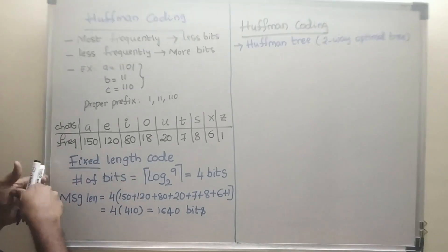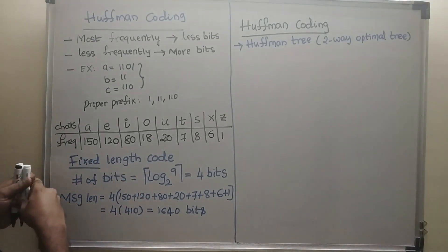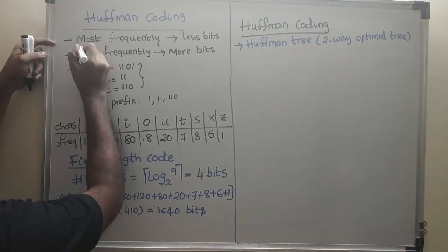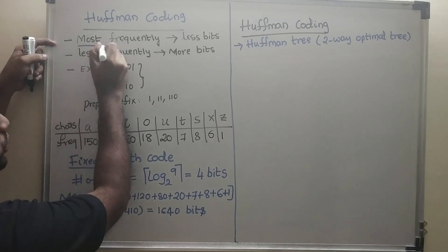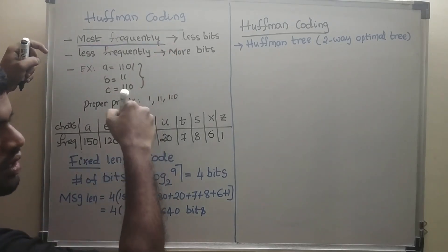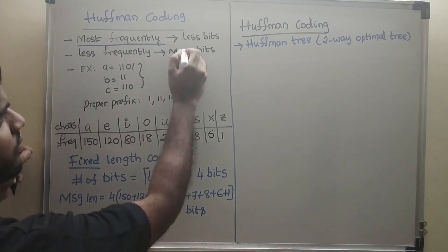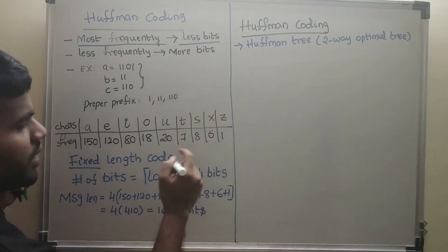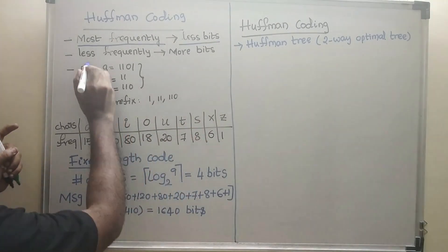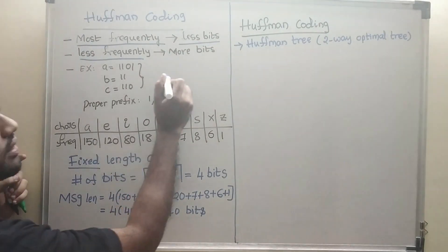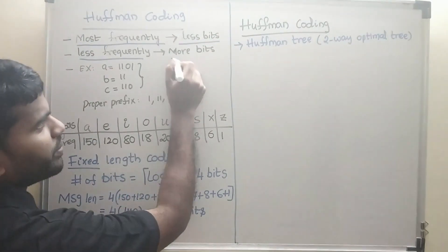Here we will discuss Huffman coding introduction. Whatever characters occur most frequently will get fewer bits to represent them. Less frequently occurring characters will get more bits.